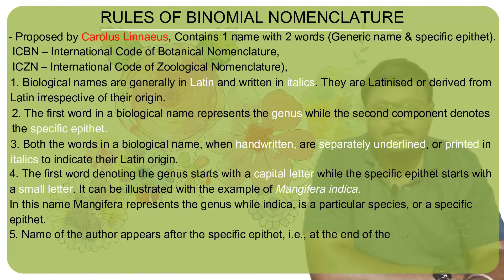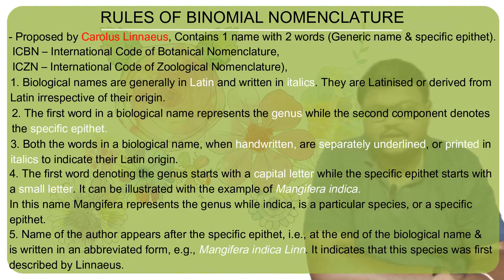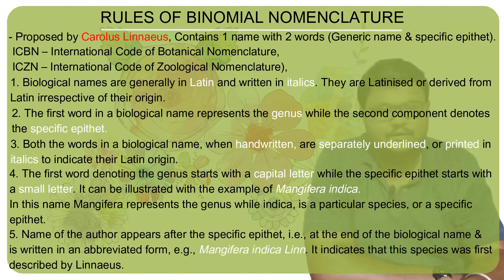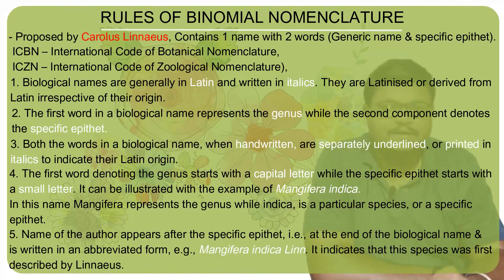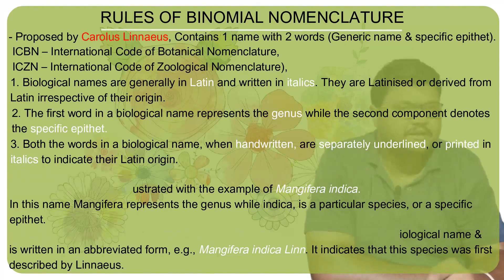Rule number five: the name of the author — the scientist or discoverer — should be added at the end of the specific epithet. For example, mango is written as Mangifera indica Linn, where 'Mangifera' is the genus name, 'indica' is the specific epithet, and 'Linn' refers to Carolus Linnaeus, who proposed, theorized, and did the foundational work on it. It indicates that the species was first described by that particular scientist.